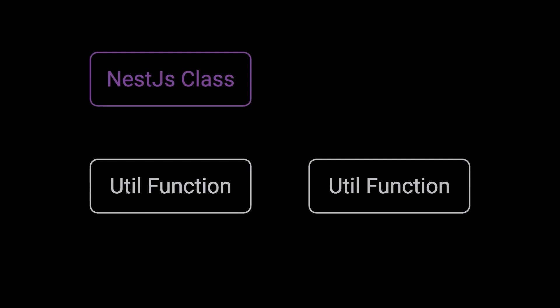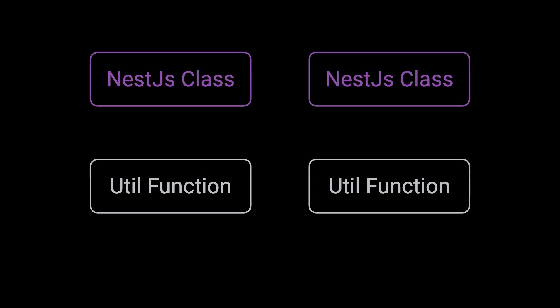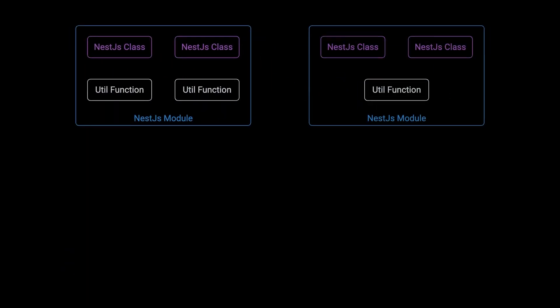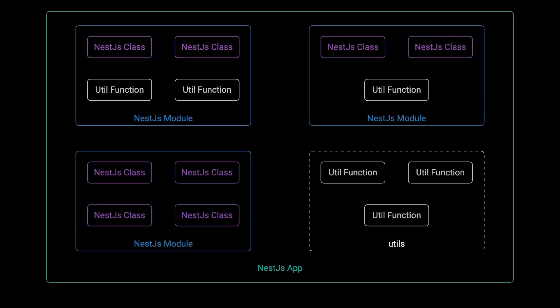Before I show you how to write the tests, let me show you what kind of tests we'll be writing. In a typical NestJS application, you've got utility functions, you've got NestJS classes like services and controllers, and these classes and functions are grouped together to form modules. Your entire application is a collection of these modules. When you run your app, it typically relies on databases and external services.